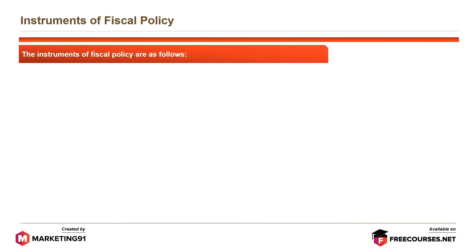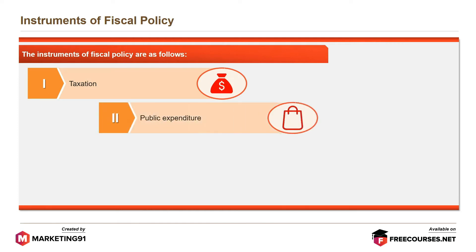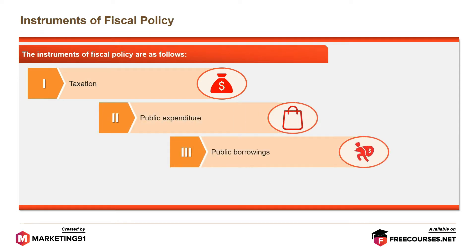Instruments of fiscal policy are: taxation, public expenditure, public borrowings and debt financing. Let's look at each of these in detail.